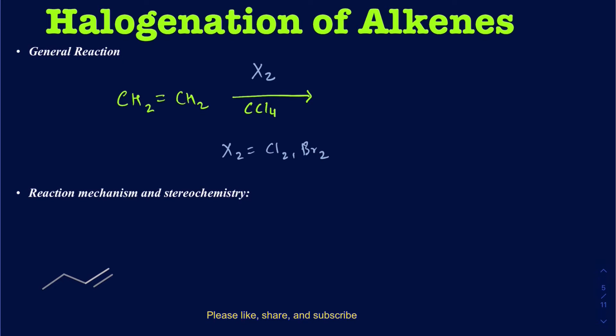When these halogens are added onto those double-bonded carbons, you don't have to worry about regiochemistry because both of those carbons are going to get the same type of atom. However, in terms of stereochemistry, they are added and tied to one another's orientation — if one halogen is pointed down, then the other halogen is going to be pointed up. That's your anti-addition of these halogens. You only have to worry about this if the given carbons are chiral, but you always want to know it's an anti-addition.